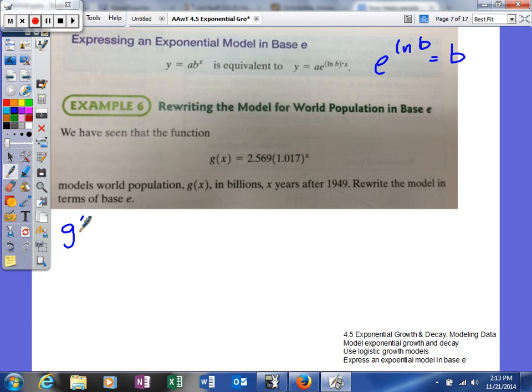Well, first of all, we'll rewrite it. So we'll basically say this. It's going to be the same 2.569. And then instead of using this right here, that's actually going to be our b. So what we'll do is we can say e to the natural log of that number, 1.017x power. So that's another model that we can use. This is basically the exponential model with base e.